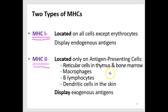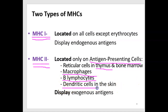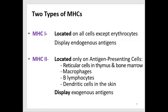MHC2s are located only in the membranes of very specific cells called antigen-presenting cells — specialized cells found in the thymus that help educate T cells, found in the membranes of macrophages, B lymphocytes, and dendritic cells in the skin. These almost always display exogenous antigens that have been engulfed, maybe processed very slightly, and then put on the cell surface.